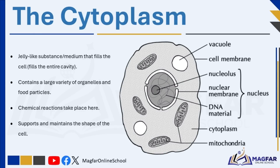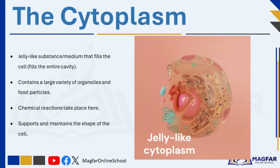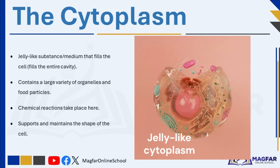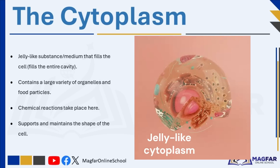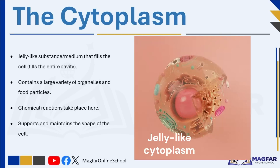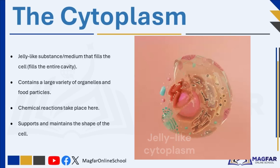The cytoplasm is a gel-like substance that fills the entire cell, much like water filling a balloon. It holds everything inside the cell, including organelles — tiny structures that perform different jobs to keep the cell functioning properly. The cytoplasm is not just a filler; it plays a crucial role in the cell's activities. Important chemical reactions take place here, and it also helps support and maintain the shape of the cell. Without the cytoplasm, the organelles would have no space to move and carry out their tasks.